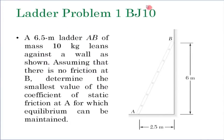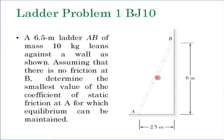Let us discuss Type 1 problems in terms of ladder problems. We have a ladder AB of mass 10 kg with uniformly distributed mass, given horizontal and vertical dimensions. At point B there is no friction, so only a normal reaction from the wall. At point A there is friction plus a normal reaction from the floor. The question asked is: what is the smallest value of coefficient of static friction at A for which equilibrium can be maintained?